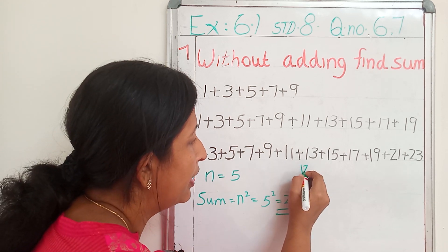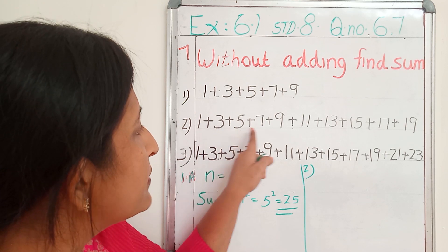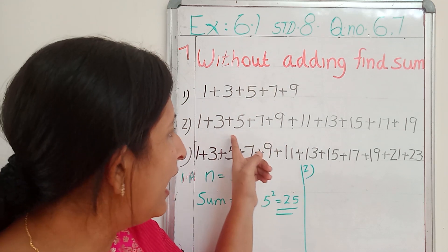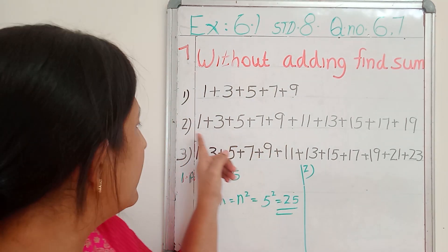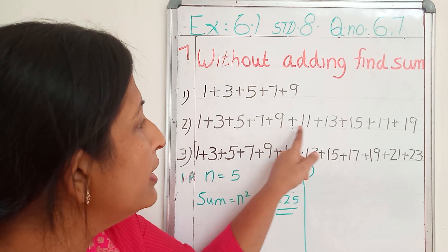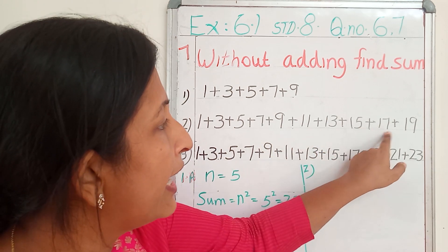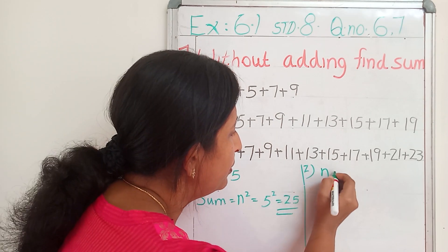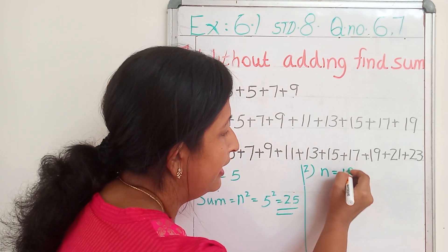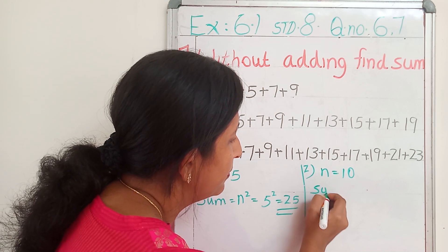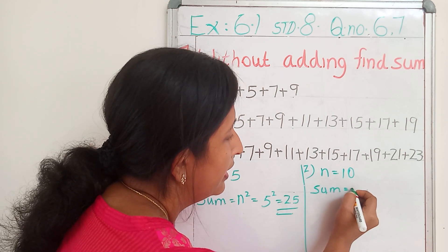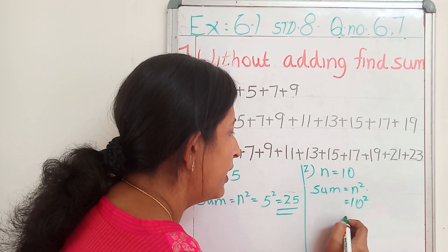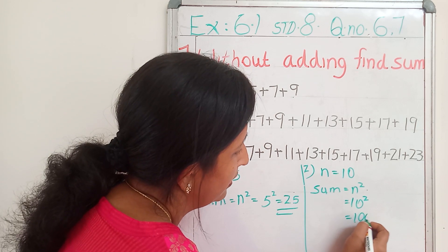Then the second one: 1 plus 3 plus 5 plus 7 up to 19. So for this, we have to count how many numbers are here: 1, 2, 3, 4, 5, 6, 7, 8, 9, 10 numbers. So what is the value of n? n equals 10. Sum equals n square equals 10 square equals 100.